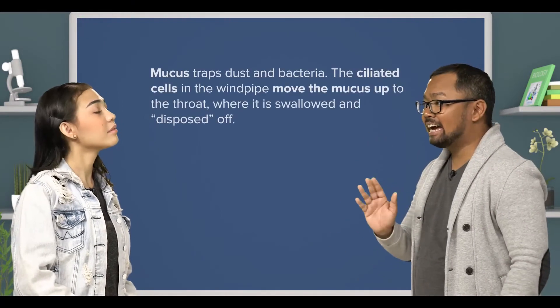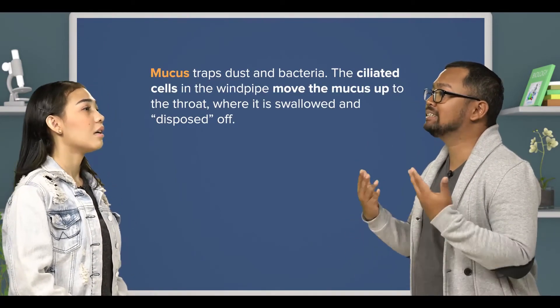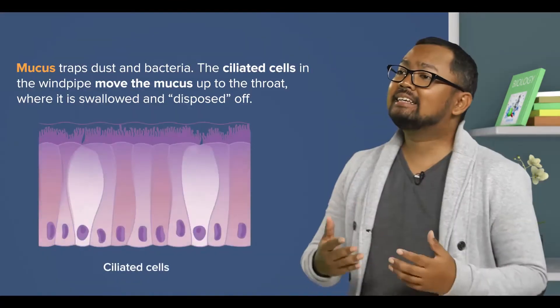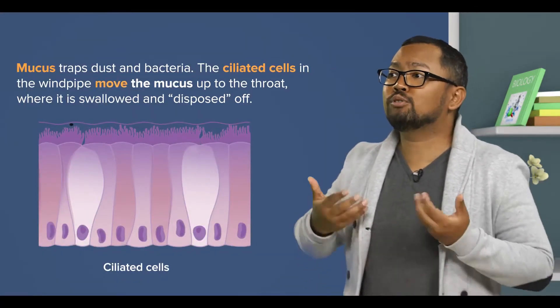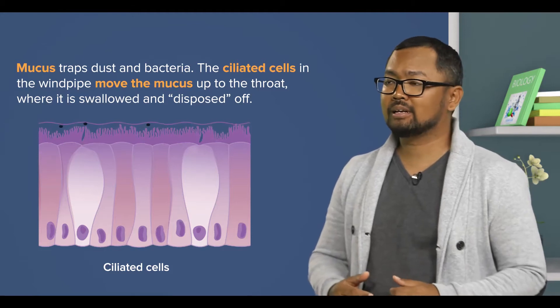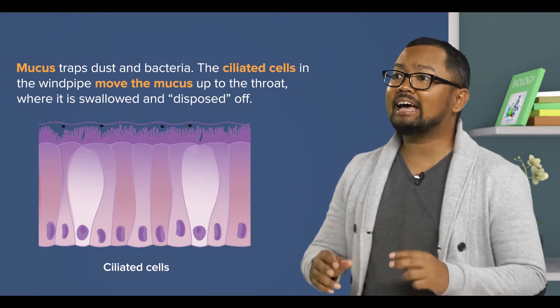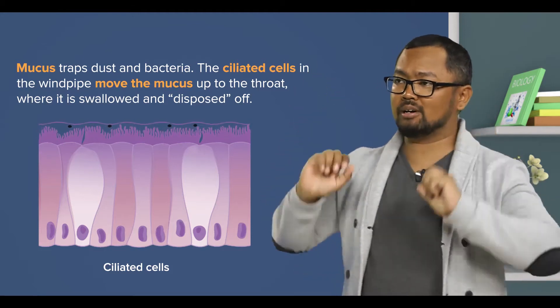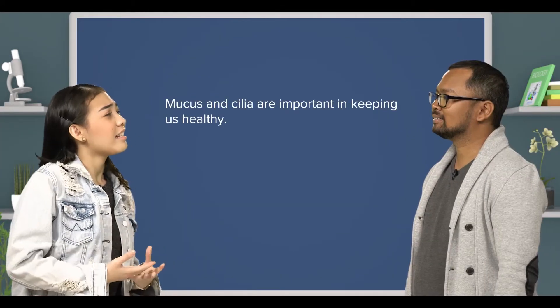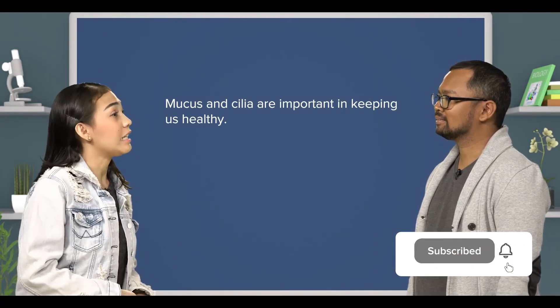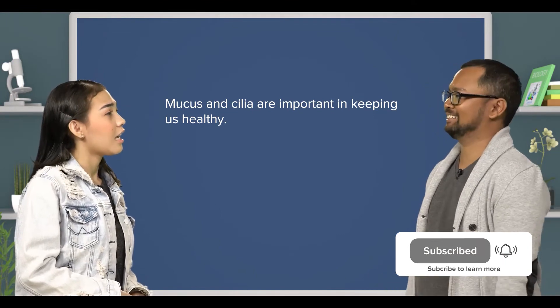It is actually mucus that traps dust and bacteria. The ciliated cells in the windpipe move the mucus up to the throat, where it is swallowed and disposed of. So, although we see mucus as something slimy, sticky, and disgusting, mucus and cilia are important in keeping us healthy.